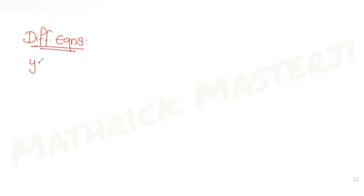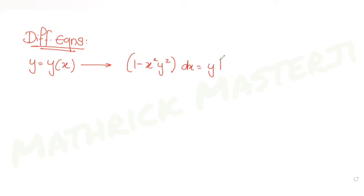Hi guys, I hope you are all doing well. Let's see today's question. Today's question is from the topic of differential equations. The differential equation given to us is: (1 - x²y²) dx = y dx + x dy.